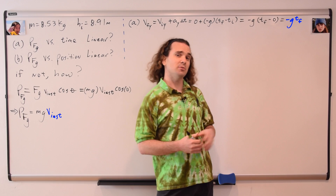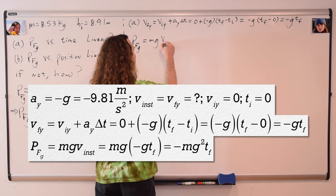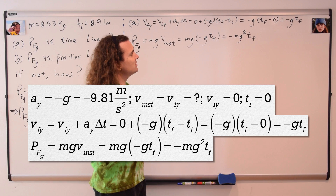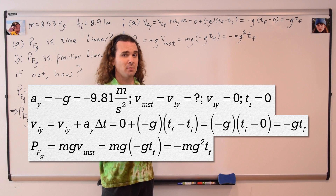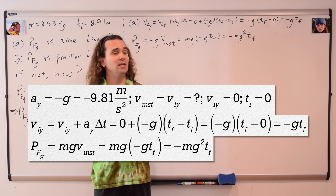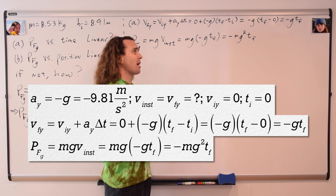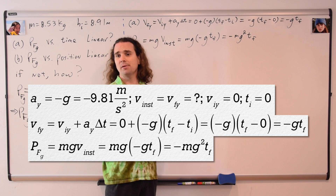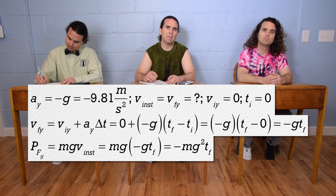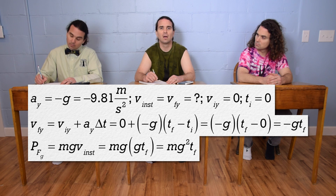Now we substitute this into the equation for instantaneous power. We get the instantaneous power delivered by the force of gravity to the pumpkin as a function of time equal to the negative of the mass times the acceleration due to gravity squared times time final. Bobby asks: don't we use the magnitudes of the force and velocity in the power equation? That makes the equation positive.